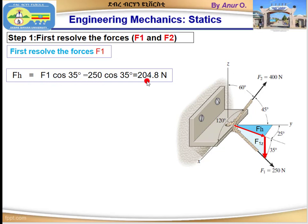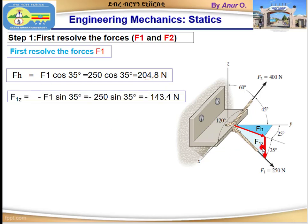Substituting F1 = 250 N, we get Fh = 204.8 N. Now F1z is equal to negative F1 sin 35 degrees, because this force is opposite to the 35-degree angle. The negative value indicates this force acts in the negative z-axis, downward. Therefore F1z equals minus 250 sin 35 degrees, which is negative 143.4 N.